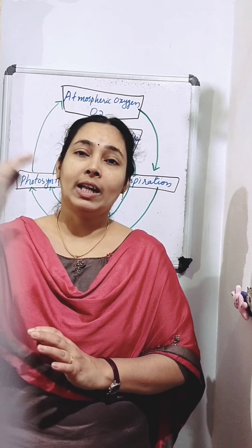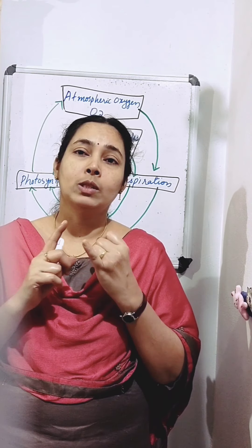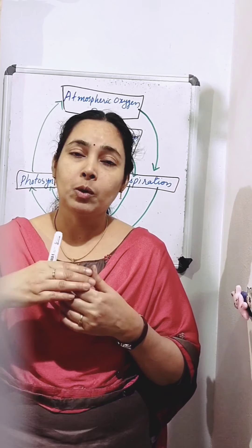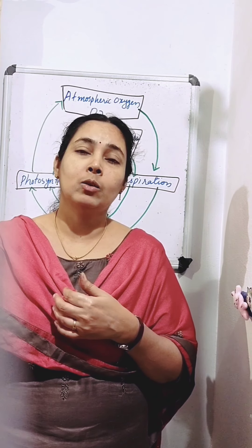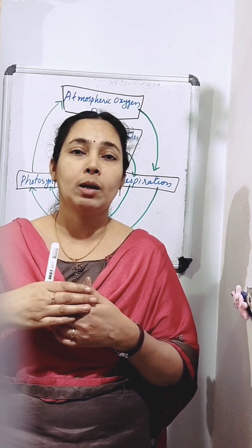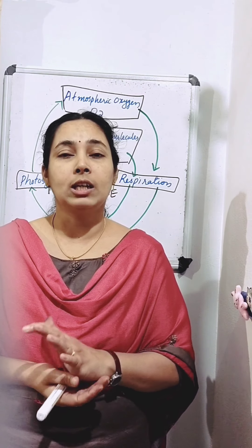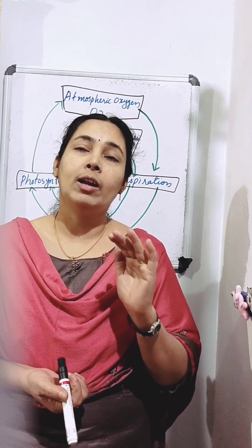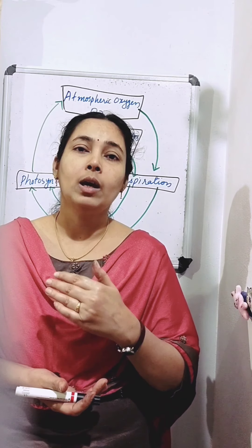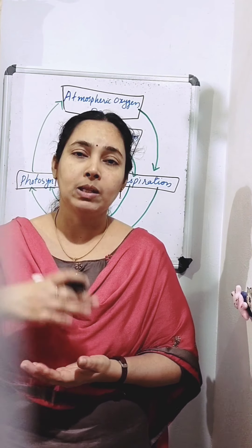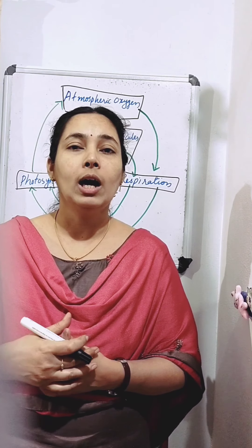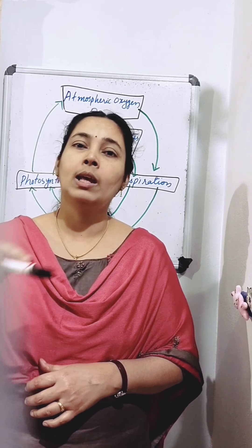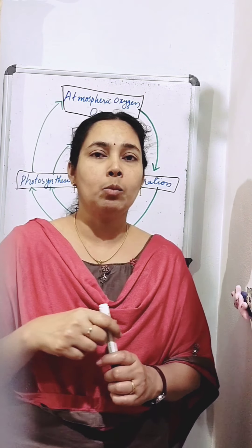So oxygen is released during the process of photosynthesis. We are taking oxygen in through the processes of combustion, respiration and formation of oxides of nitrogen. And through photosynthesis, oxygen is returned back into the atmosphere. So the level of oxygen in the atmosphere is kept constant — as much as is used, that same amount is returned back. So it works as a cycle.